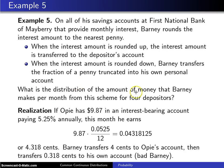What is the distribution of the amount of money that Barney makes per month from this scheme from his four depositors?